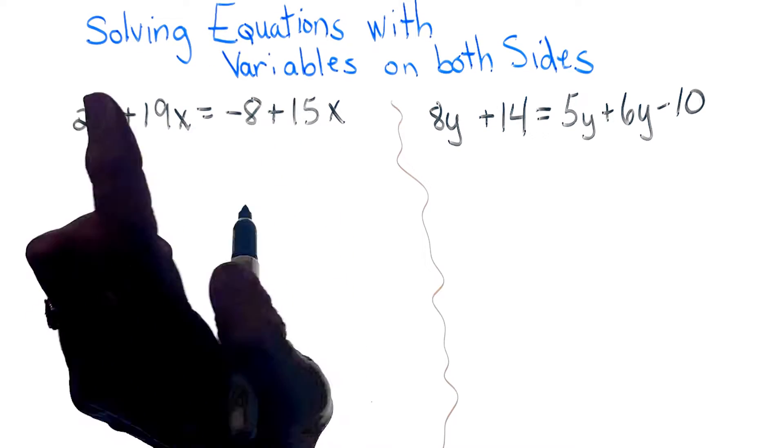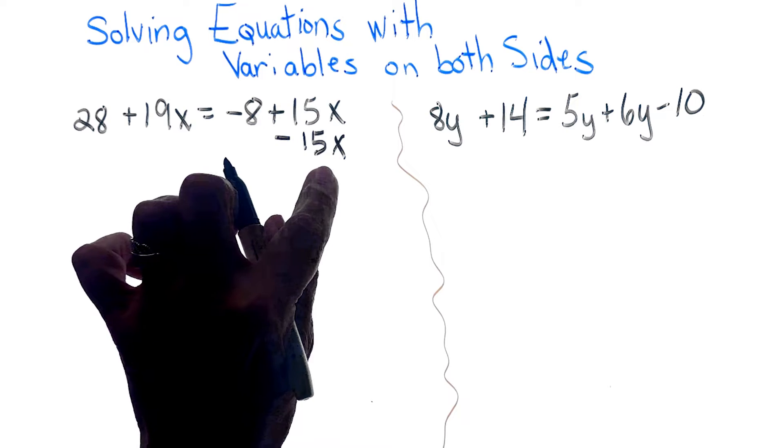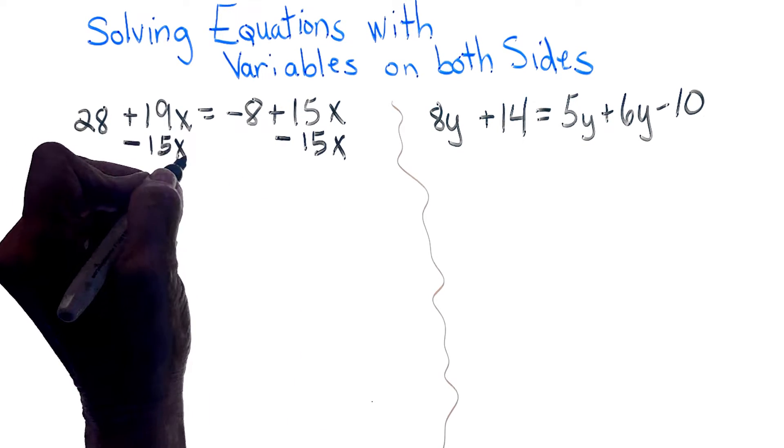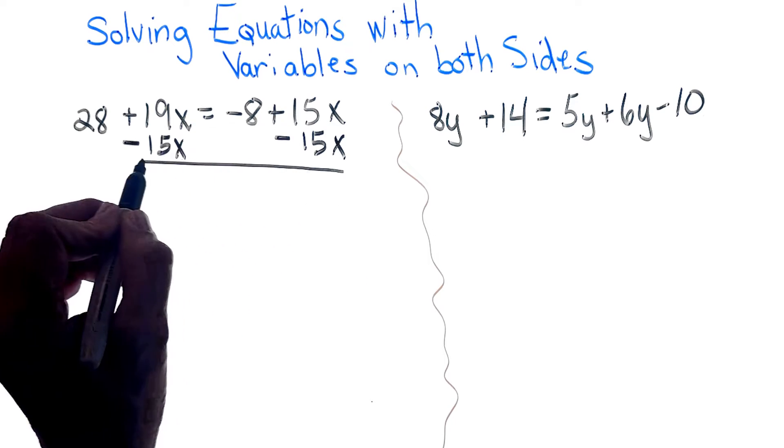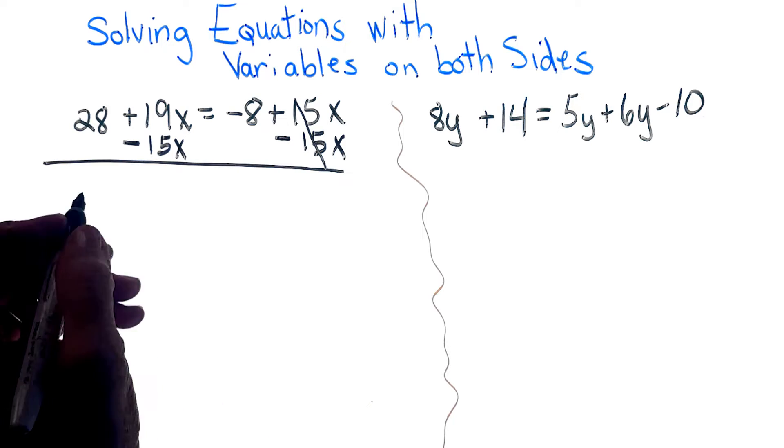So since this is a plus 15x, I'm subtracting 15x from this side of the equation. And remember, whatever you do to one side of the equation, you must do to the other. So I see that this cancels out, which that was my goal.